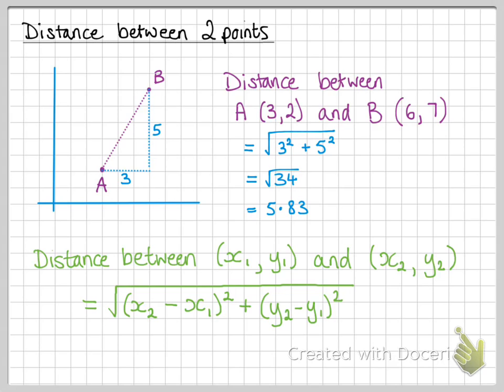In general terms, the distance between two points that are defined as x1, y1 and x2, y2 is the difference between the x-coordinates squared plus the difference between the y-coordinates squared and then square root the answer.